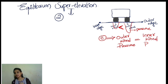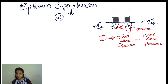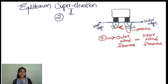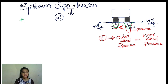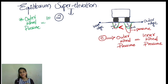So the first condition for equilibrium super elevation is: outer wheel pressure is equal to inner wheel pressure. When the outer wheel pressure equals the inner wheel pressure, we have reached the equilibrium super elevation.